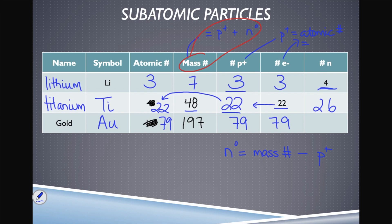We do some math to figure out the number of neutrons: 197 minus 79 gives us 118 neutrons for an atom of gold. Practice using your periodic table to find substances, figure out mass number and atomic number, and determine the number of protons, neutrons, and electrons for different atoms. The more work you do now, the easier chemistry becomes.